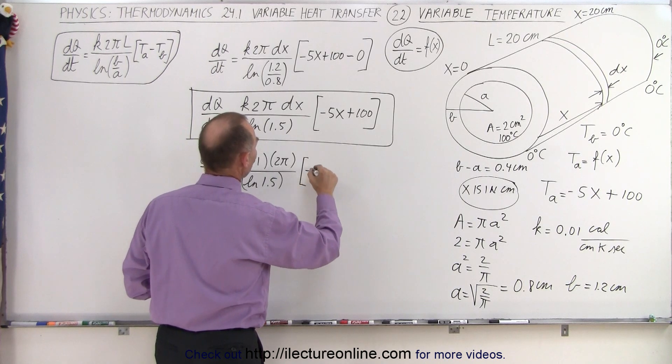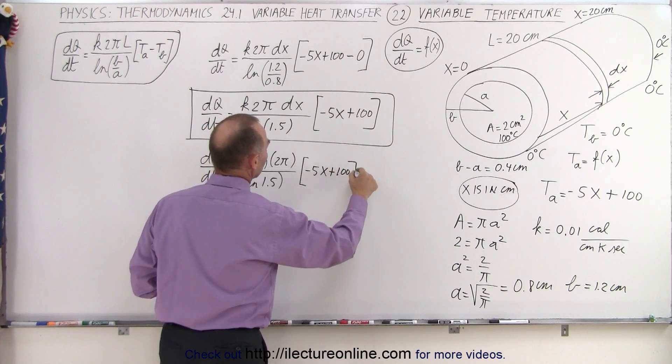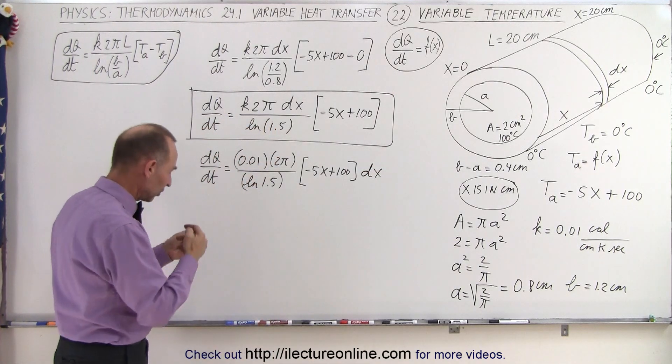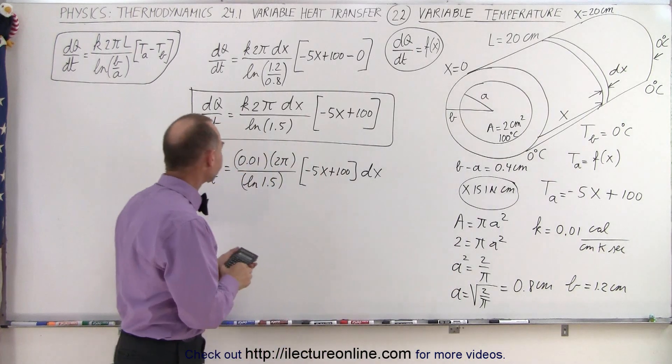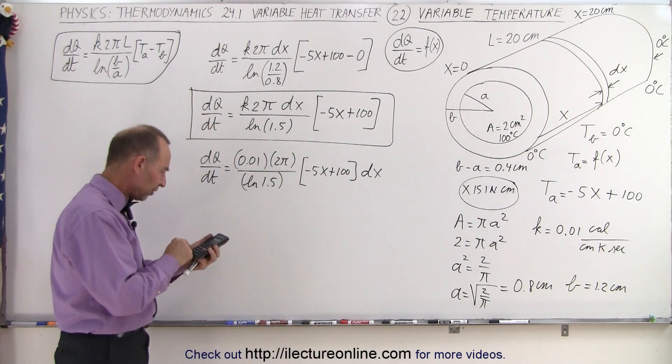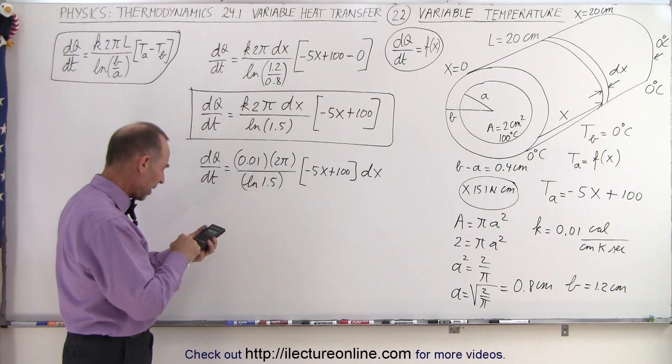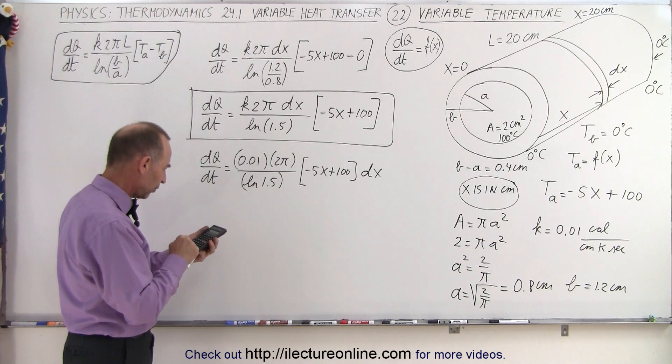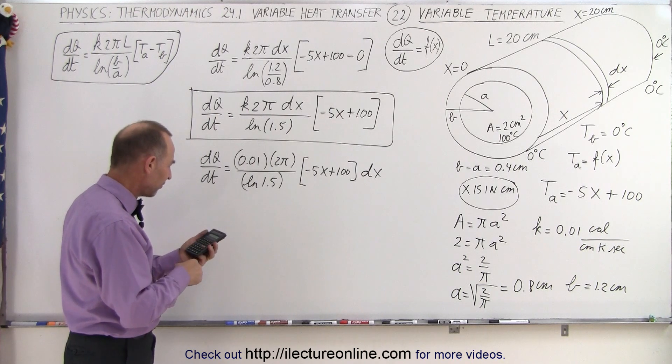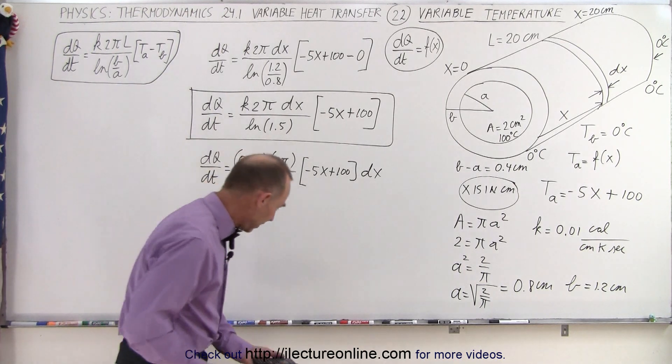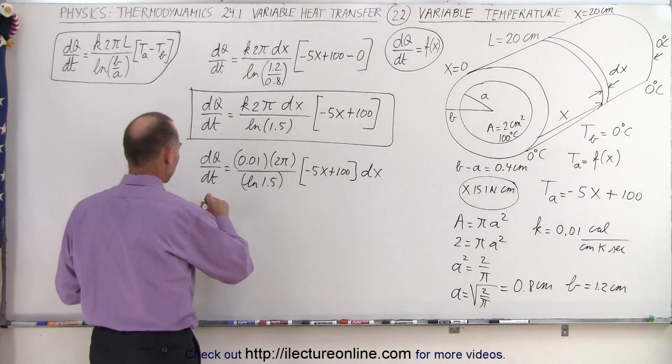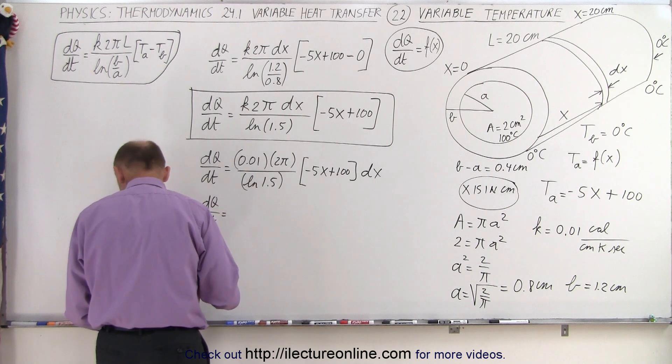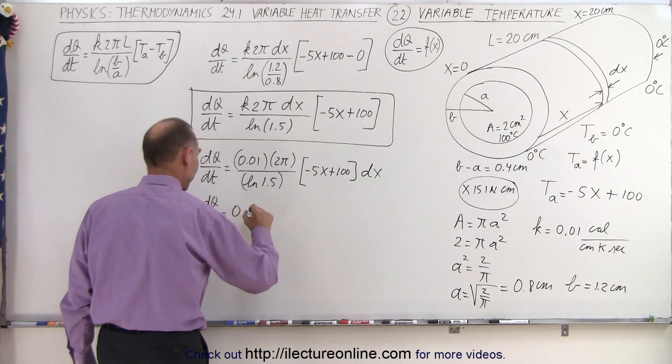So then we would get dq/dt is equal to 0.01 times 2 pi divided by the natural log of 1.5, so this all would turn into a constant, times the quantity minus 5X plus 100 and times dx. So now we have a much cleaner equation with those numbers. So we end up with 0.01 times 2 times pi divided by the natural log of 1.5 and so it gives us 0.155.